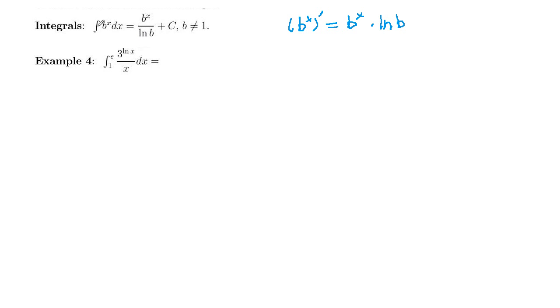Now really what you could do is rewrite this in terms of e and then use a u substitution and show that this formula holds. So let's say we want to find the definite integral from 1 to e of 3 to the ln x over x.